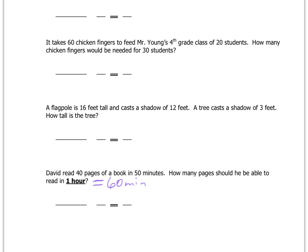We're comparing pages to minutes, so we'll write our word ratio first: pages to minutes. We're comparing 40 pages in 50 minutes, and set that equal to an unknown amount of pages — we'll use variable p — in one hour, which is 60 minutes. We keep that as 60, not as 1. Then we go ahead and cross multiply, and we get 50 times p equals 40 times 60.